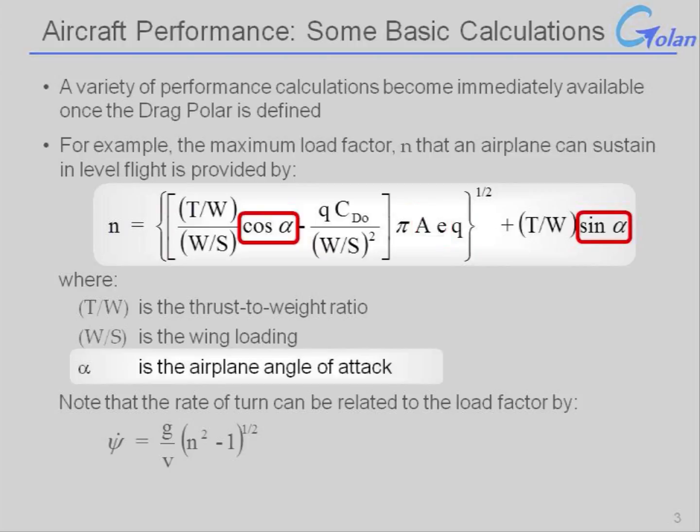The angle of attack dependency is relatively weak in the sense that we have the angle of attack cosine on the one hand, which for low angle of attack will be close to one, and the angle of attack sine term times the thrust-to-weight ratio on the other hand.